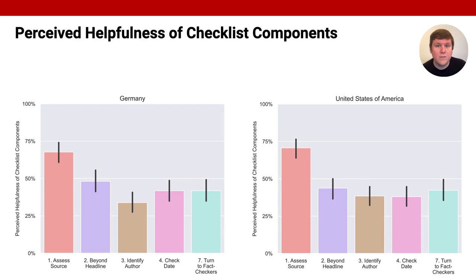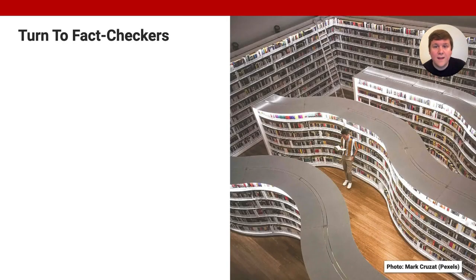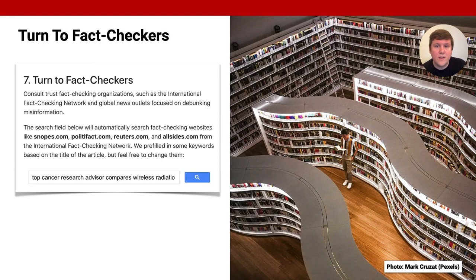Participants also rated how helpful they perceived acting on the five components that we augmented. In both experiments, acting on the assessing the source component is perceived as most useful. In the paper, we thoroughly investigate the correlations between the different ratings and task performance. We find that the technically most sophisticated Turn to Fact Checkers component from the checklist was perceived as less helpful and was acted on far less than simpler components like Assess the Source.